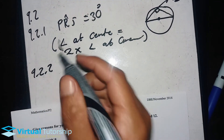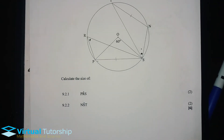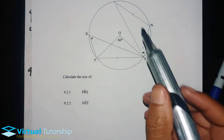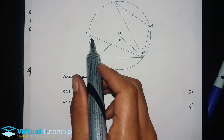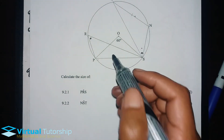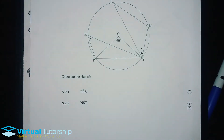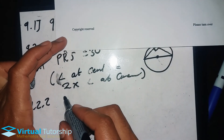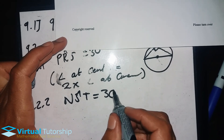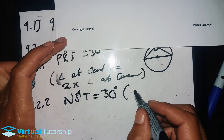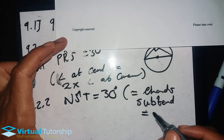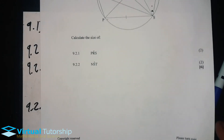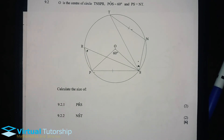9.2.2: calculate angle NST. The angle NST is equal to this angle because the double angle is opposite to these chords, and since the chords are equal, the angles are also equal. So NST is equal to 30 degrees. The reason is: equal chords subtend equal angles.